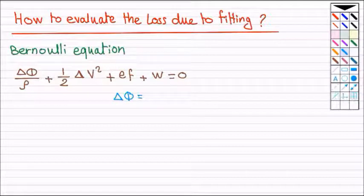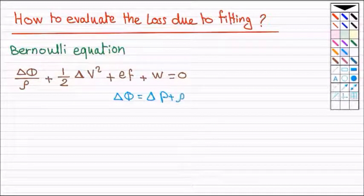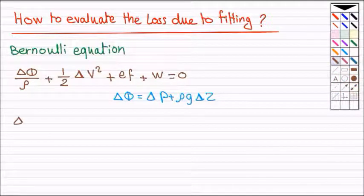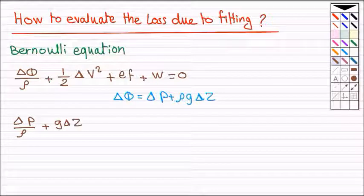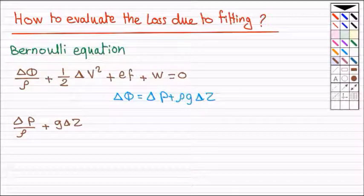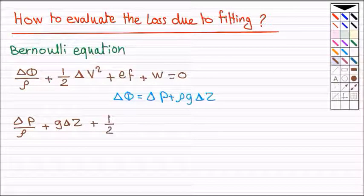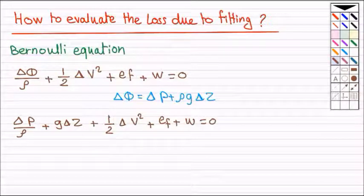Delta phi equal to delta p plus rho g delta z. So we can write Bernoulli in another way: delta p divided by rho plus g delta z plus half delta v squared plus ef plus w equal to zero.